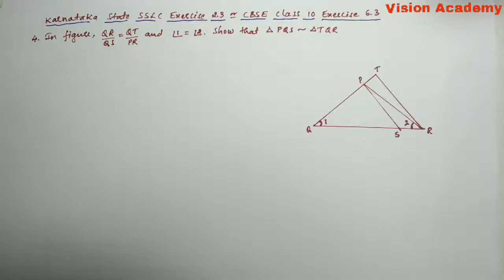In figure, QR divided by QS is equal to QT divided by PR and angle 1 is equal to angle 2. Show that triangle PQS is similar to triangle TQR.